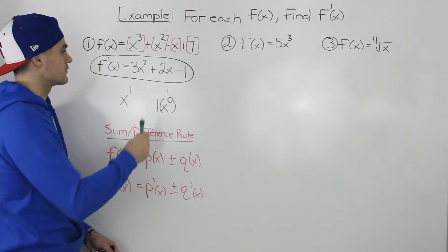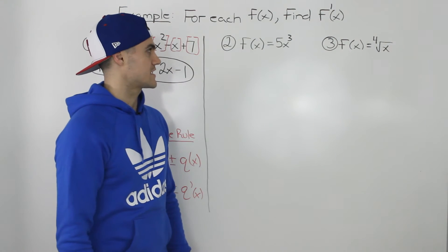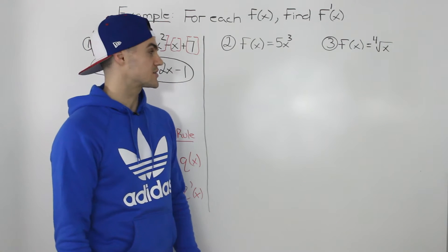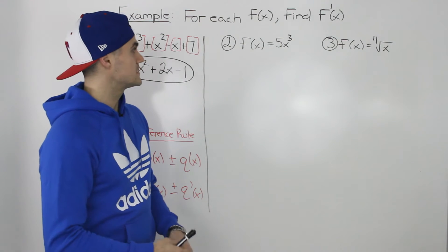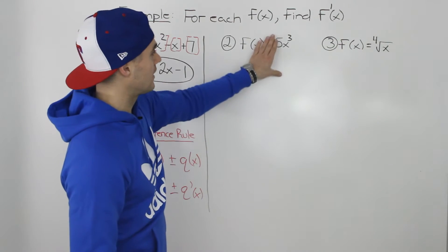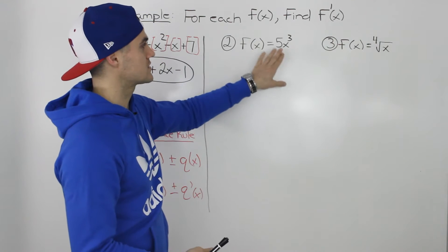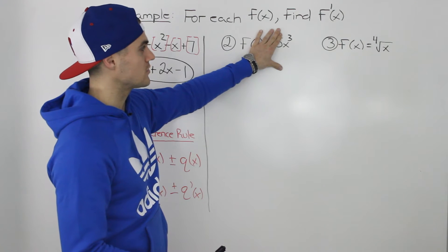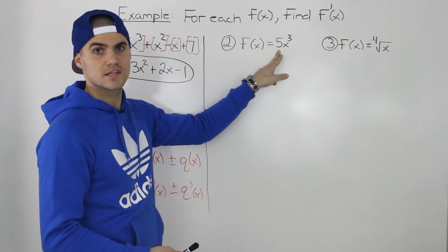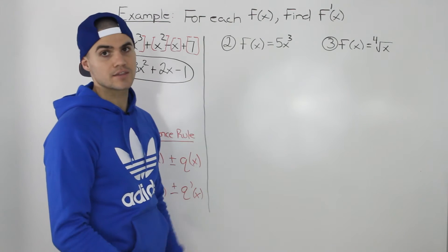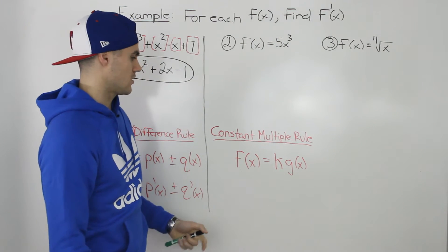Moving on to the second example, we've got f of x equals 5x cubed. Again, so far we've been dealing with functions in the format x to the power of n. The derivative of x to the power of 3 we know is 3x squared. But what happens when we have this constant in front? We haven't dealt with this situation yet. Well, we can use something called the constant multiple rule.